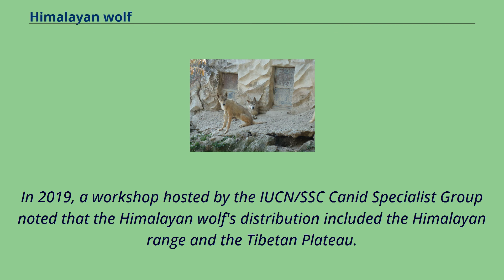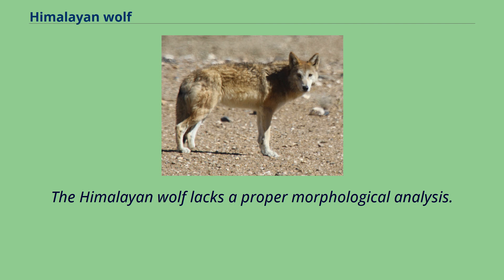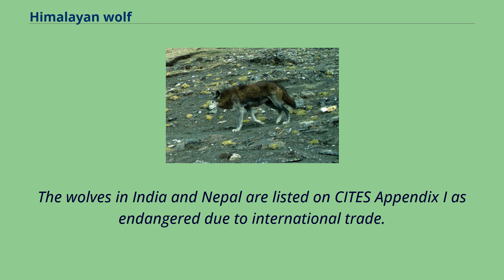In 2019, a workshop hosted by the IUCN-SSC Canid Specialist Group noted that the Himalayan wolf's distribution included the Himalayan range and the Tibetan plateau. The group recommends that this wolf lineage be known as the Himalayan wolf and classified as Canis lupus chanco until a genetic analysis of the holotypes is available. The Himalayan wolf lacks a proper morphological analysis. The wolves in India and Nepal are listed on CITES Appendix I as endangered due to international trade.